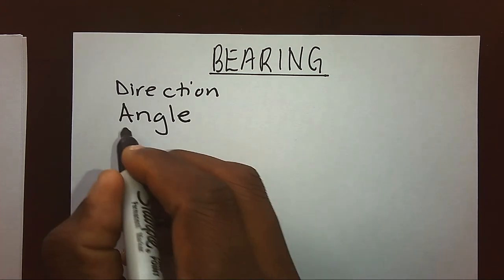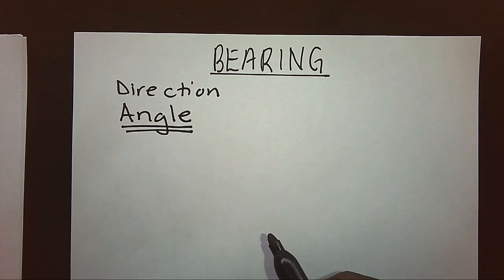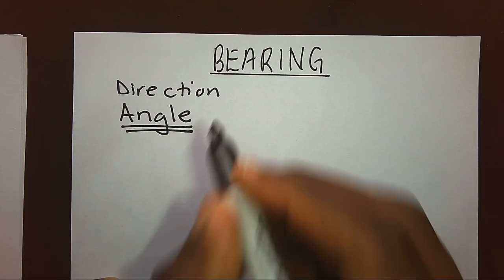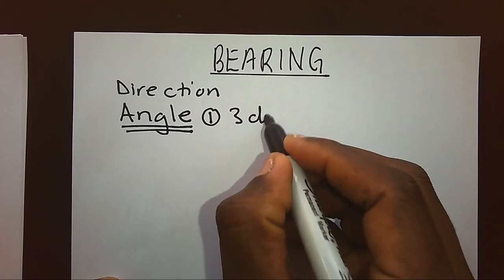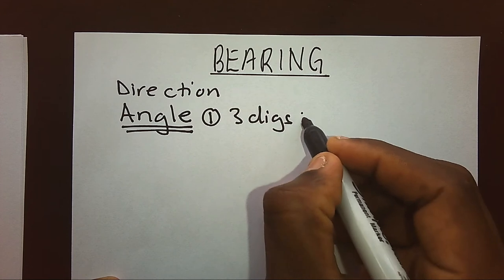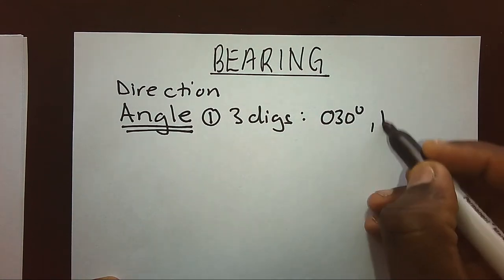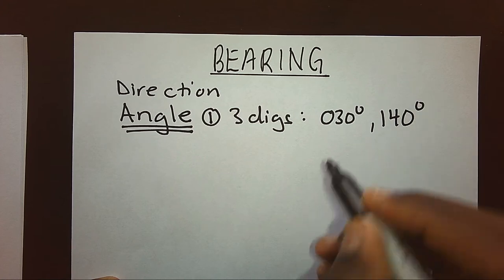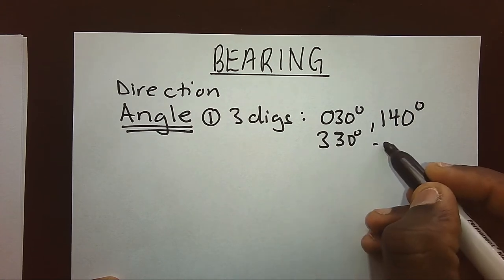An angle alone will show us direction. How is this angle supposed to be? It has rules. One, it has to be in three digits, e.g. 030°, 140°, 330° etc.